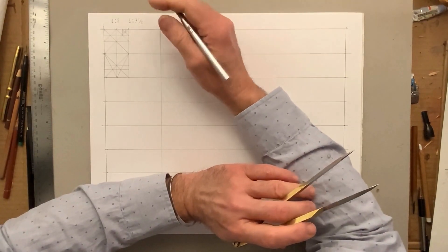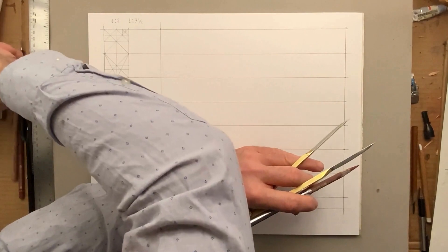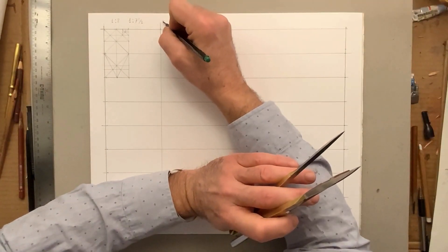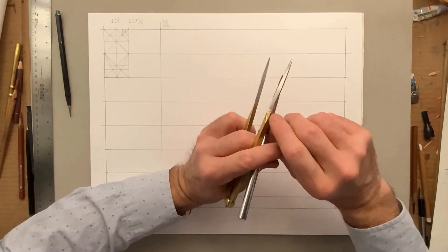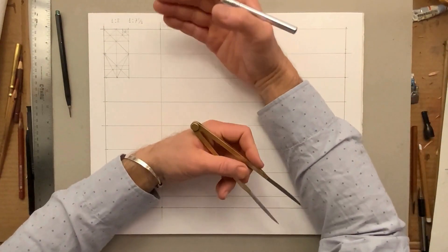The width of the head could be anywhere between two-thirds and three-quarters, so we just have to decide what we want to use. I like two-thirds - it's totally arbitrary.